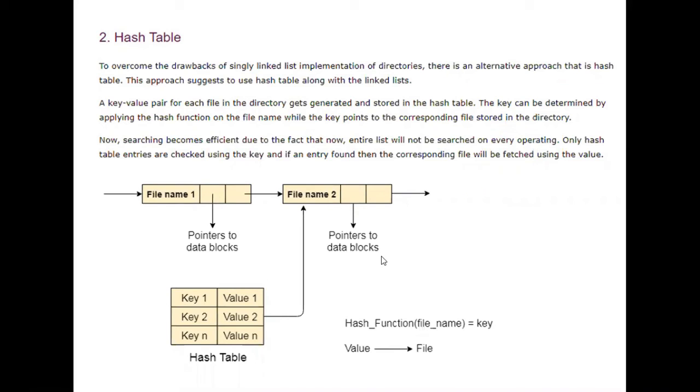In hash table, you have a table which has entries such as key value and the value which points to the file name. Searching becomes efficient due to the fact that the entire list will not be searched on every operation. Instead of searching the entire list in a linear fashion from 1, 2, 3, 4, 5, if you want to access the fourth page, you can directly go to the hash table. You can search that particular key value for corresponding file name. That particular value will be associated with the file. Only hash table entries are checked using the key, and if an entry is found, then the corresponding file will be fetched using that particular value.